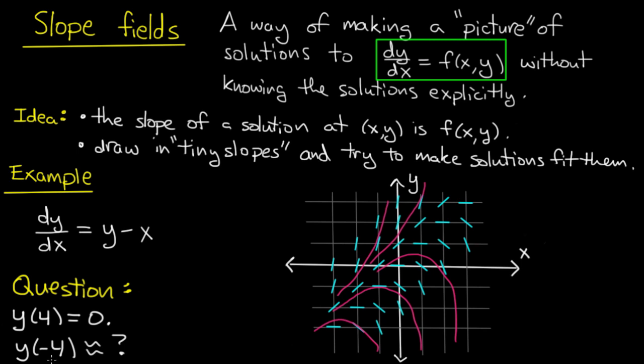then what is the value of that solution at x equals minus 4? And we can actually conclude, make a pretty good conclusion as to what it would be. So let's go over here. 1, 2, 3, 4. Here I am over here.